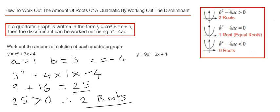Let's have a look at our second example. This time we've got y equals 9x squared minus 6x plus 1. So this time our value of a is 9, our value of b is minus 6, and c is equal to 1.